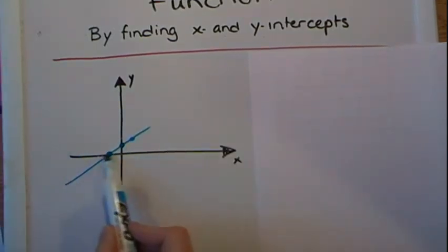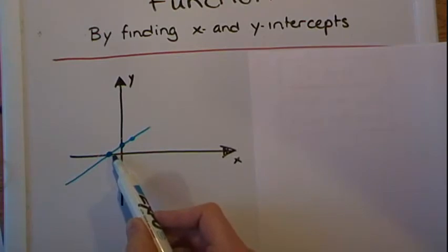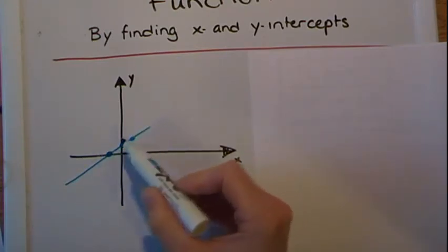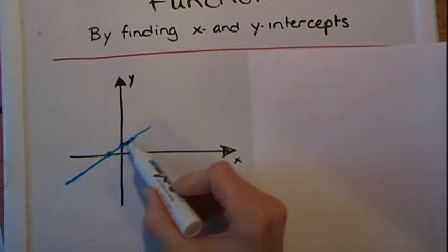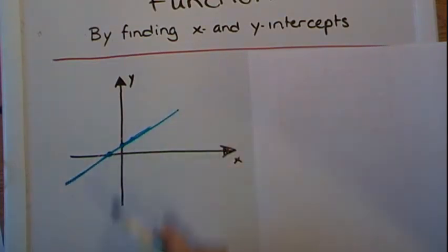On the other hand, when we're talking about x intercepts, all along the x axis the y coordinate is always zero. And these two principles are going to be very useful when we're solving for intercepts.